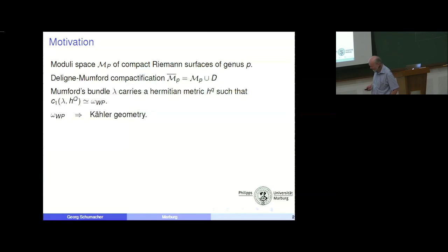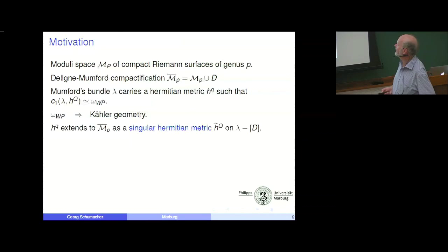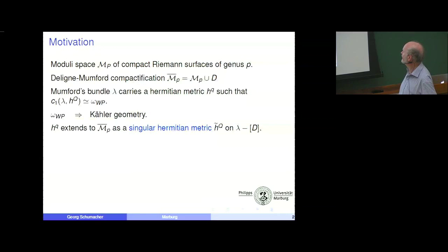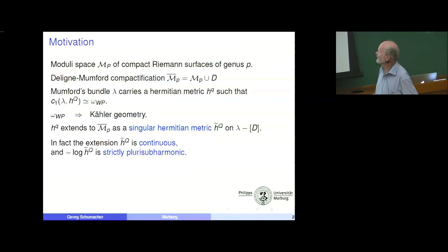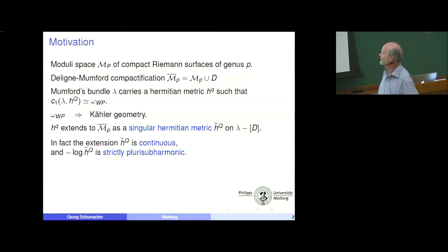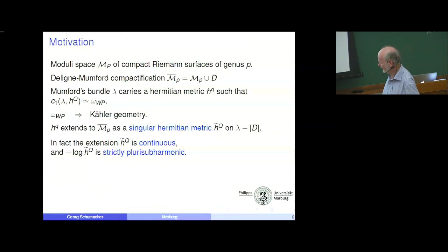The reason why we want to look at this kind of approach is it allows us to use methods of Kähler geometry. The metric on Mumford's bundle extends to the compactification, to the Deligne-Mumford compactification, as a singular Hermitian metric on a certain line bundle where we have to subtract certain components of the compactifying divisor. While the metric is not that singular — it is continuous at the boundary — and minus the logarithm of the metric is strictly plurisubharmonic.